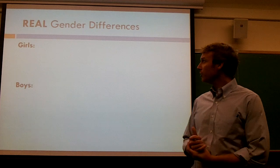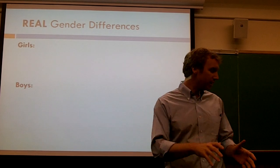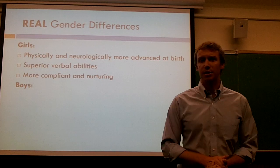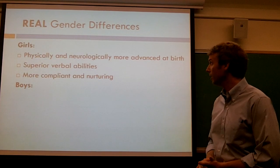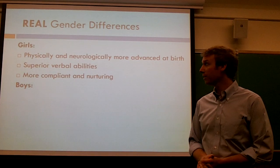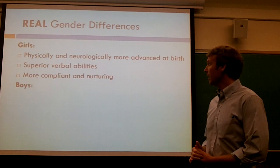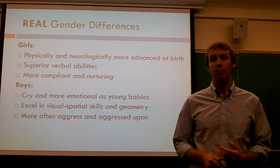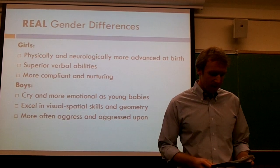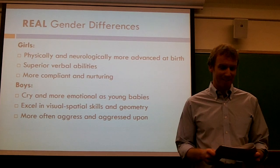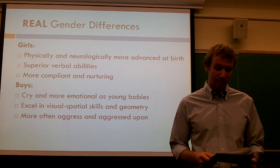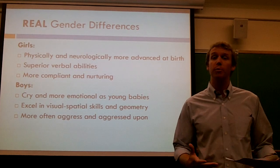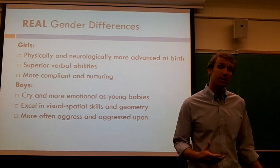Moving on, when we're thinking about gender differences, there are lots of myths out there and lots of real gender differences. So what are some real ones? These are things that research has actually found. Girls are physically and neurologically more advanced at birth, they have superior verbal abilities, and they're more compliant and nurturing. Boys cry and are more emotional as young babies, they excel in visual spatial skills and geometry, and they have more genetic defects — physical disabilities, reading disabilities, speech defects, and school and emotional problems.